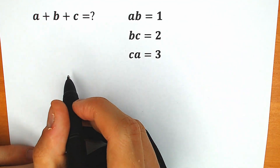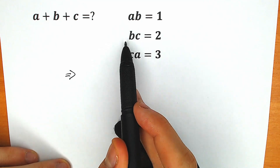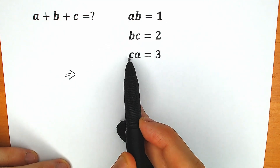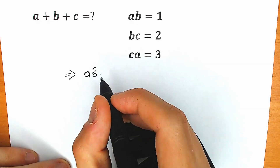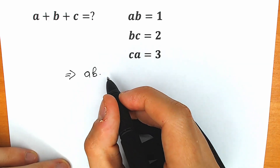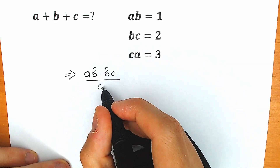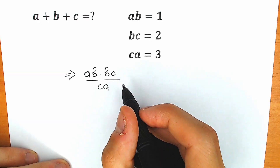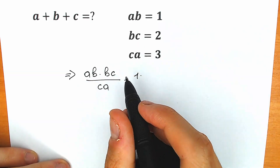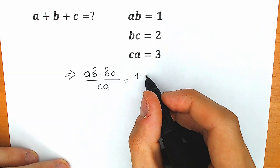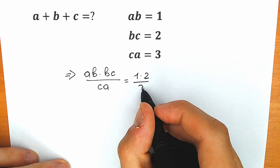So first step: what I'm going to do right here. Let's multiply ab times bc and divide it by ca. So we have ab multiplied by bc, and divide it by ca. We know ab equals 1, bc equals 2, and we divide by ca equals 3.